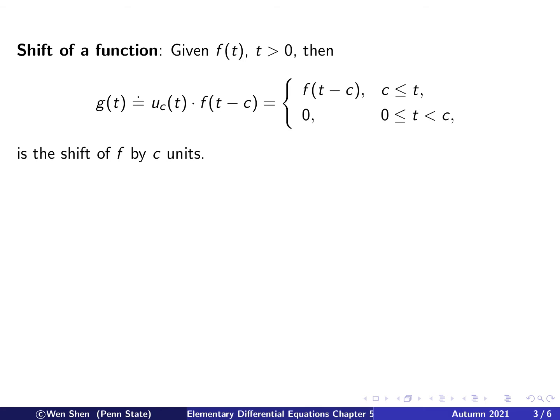Now let's look at how we shift a function. Let's say we have a function f of t, given for t bigger than 0. We can define the function g of t as follows: multiply the function f by uc of t, the step function at c, but at the same time shift the f function by c units to the right. So for t less than c, I just get 0, and for t bigger than c, I have this shifted function times 1.